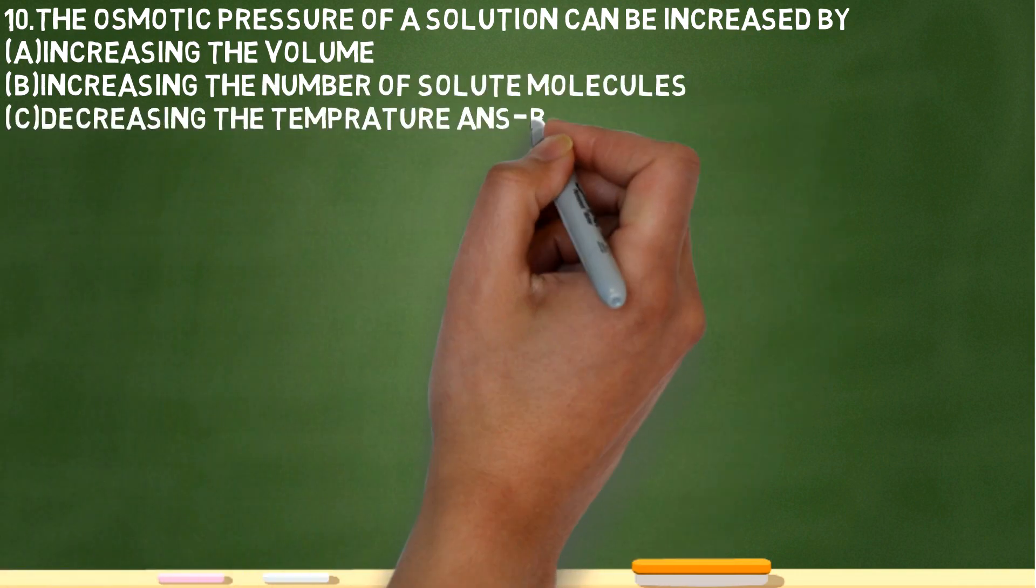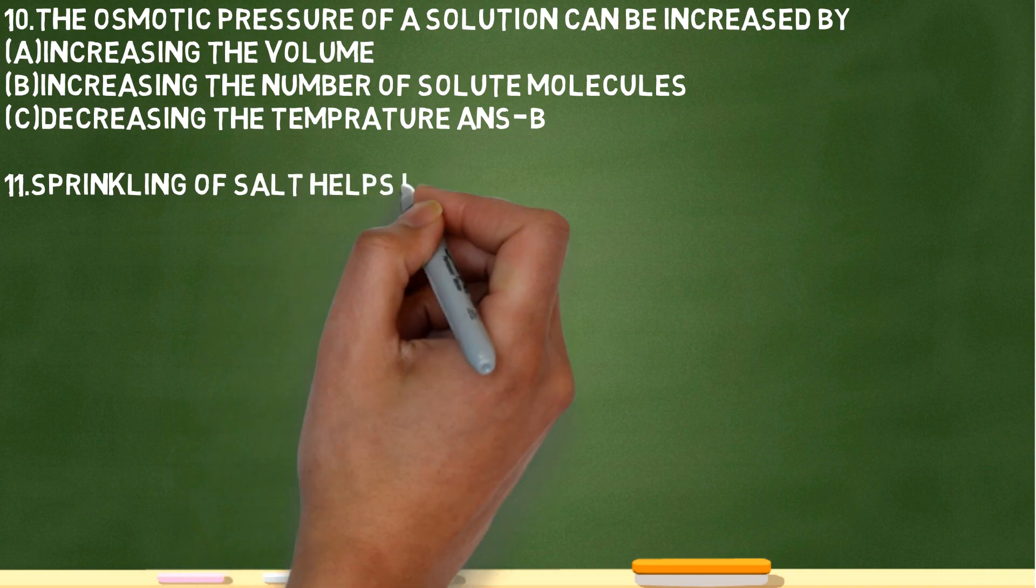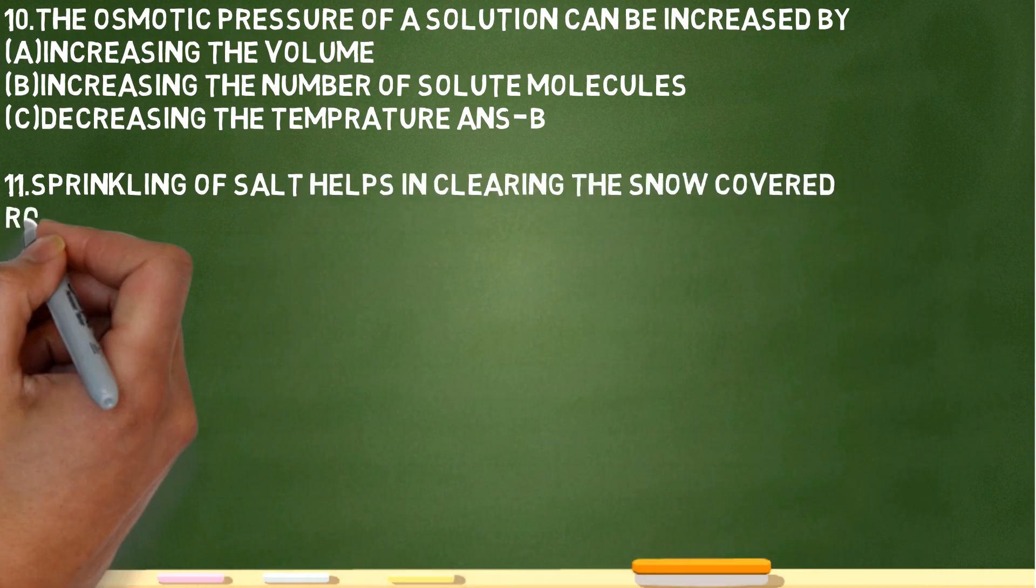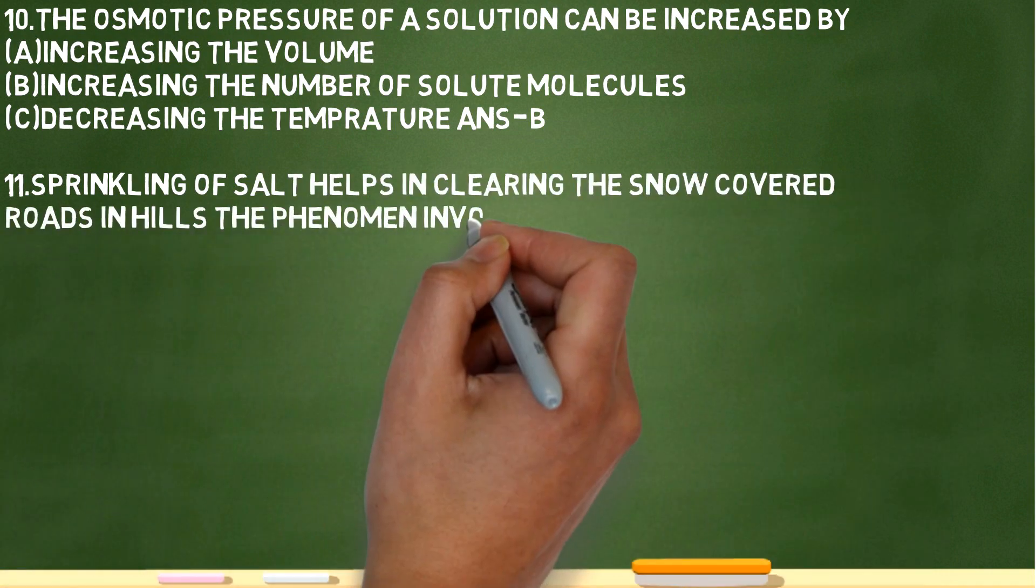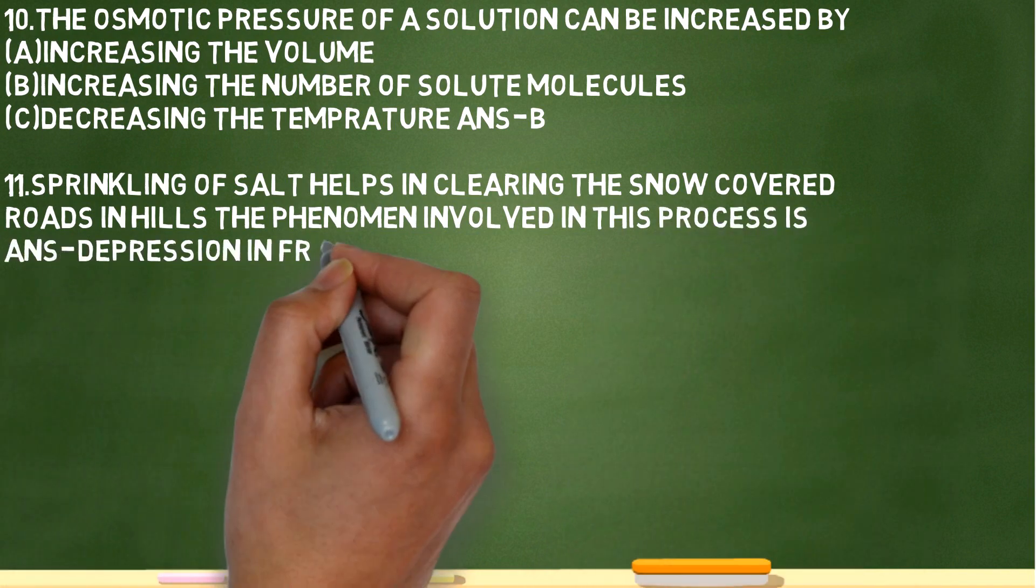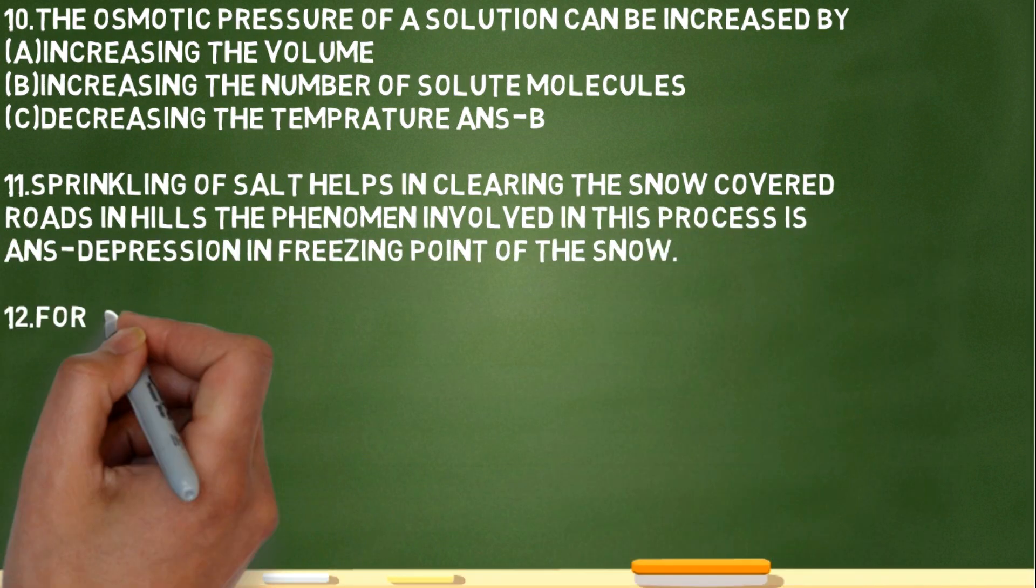Question eleven: sprinkling of salt helps in clearing the snow covered roads in hills. What is the phenomenon? Which process is involved? Depression in freezing point of snow.